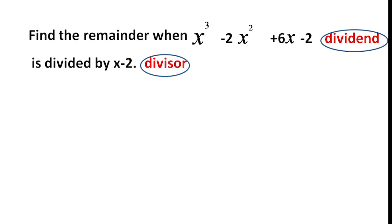The divisor is a linear polynomial. Linear polynomial means the degree of the polynomial is 1. Here, the power of x is 1. So x minus 2 is the divisor and it is linear.